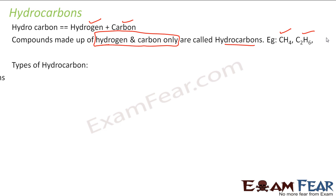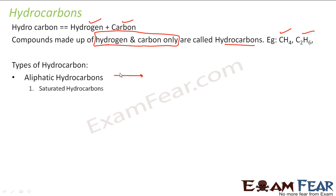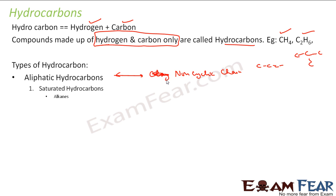There are various types of hydrocarbons. The first is aliphatic hydrocarbons. In aliphatic hydrocarbons, I have long chains, or non-cyclic chains. Branched versions are also okay. This is called aliphatic. I have saturated — in saturated I have alkanes. I have unsaturated hydrocarbons, in which I have alkenes and alkynes.